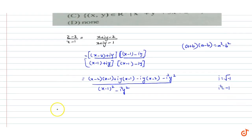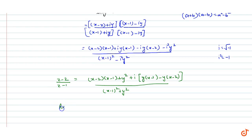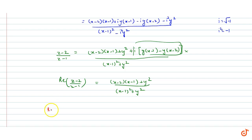So (z - 2)/(z - 1) becomes [(x - 2)(x - 1) + y²] + i·[y(x - 1) - y(x - 2)], all divided by (x - 1)² + y². Now the real part of (z - 2)/(z - 1) is the part with no imaginary term, which is [(x - 2)(x - 1) + y²] / [(x - 1)² + y²].